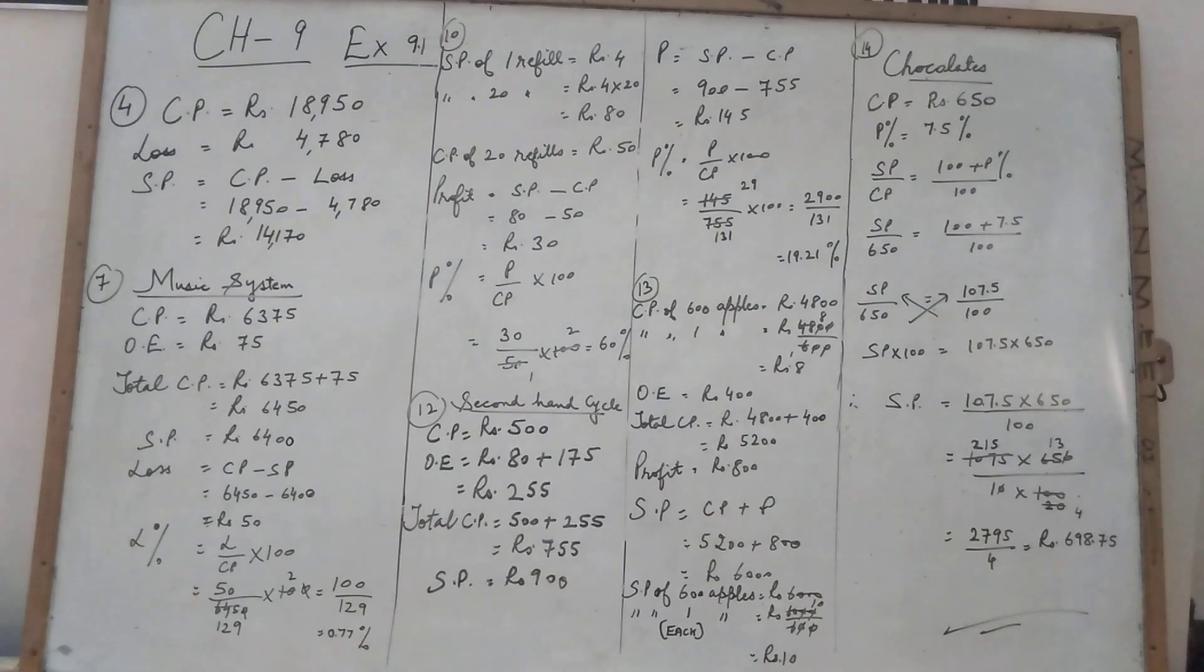See the question in your book, page number 113. A TV was bought for Rs. 18,950 and sold at loss of Rs. 4,780. Find its selling price. Now children, there is one word, bought. Bought means purchased. And I have already told you purchasing price is known as the cost price.